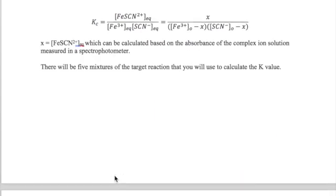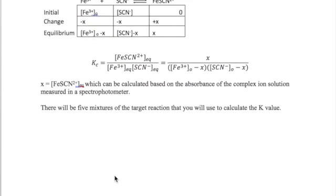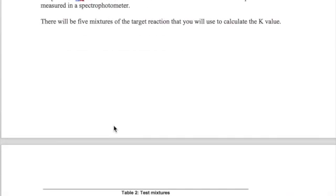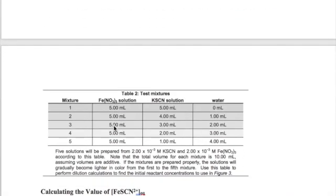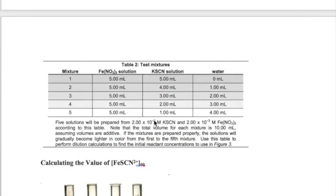To be able to calculate K, therefore, we will need the values of the initial concentration of reactants, as well as X, which is the equilibrium concentration of the product. The values we will use to calculate the initial concentration are given in Table 2 in your lab procedure.